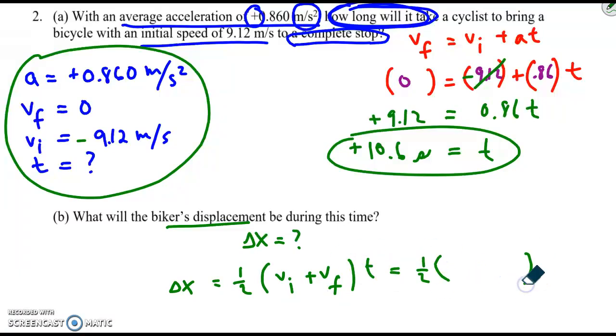Delta x equals one-half vi plus vf times time. I can plug in the values. Vi is negative 9.12. Vf is zero. And the time is... I'm going to use the unrounded time, 10.604. Or I'm looking back to my calculator.